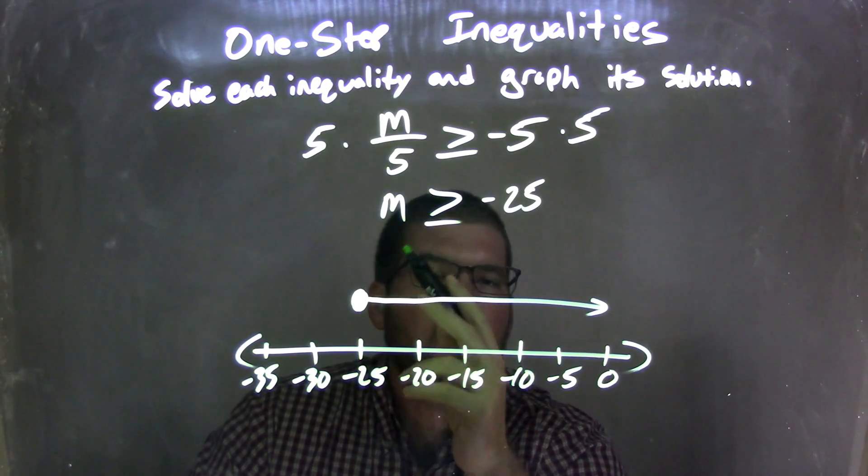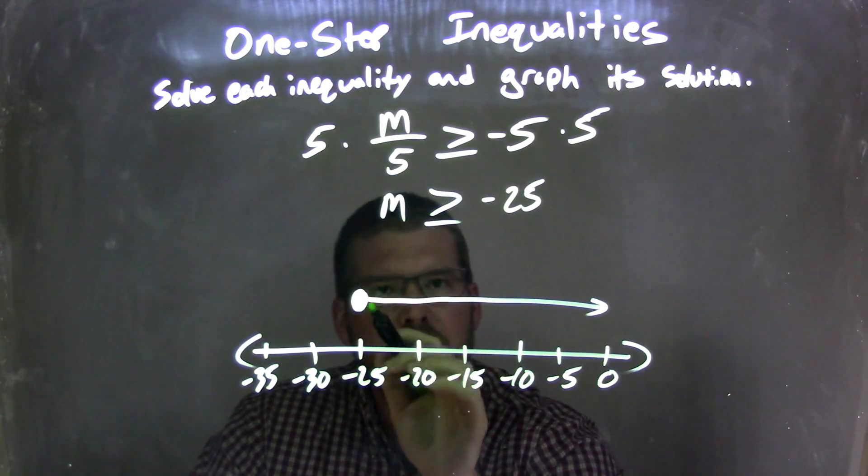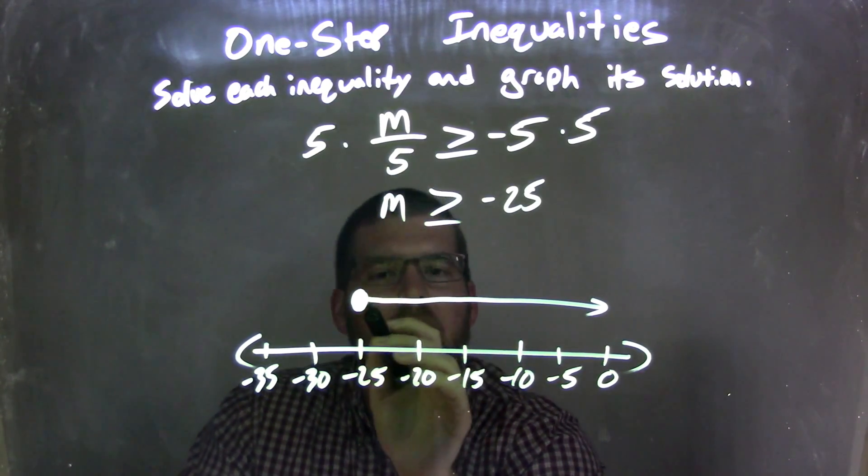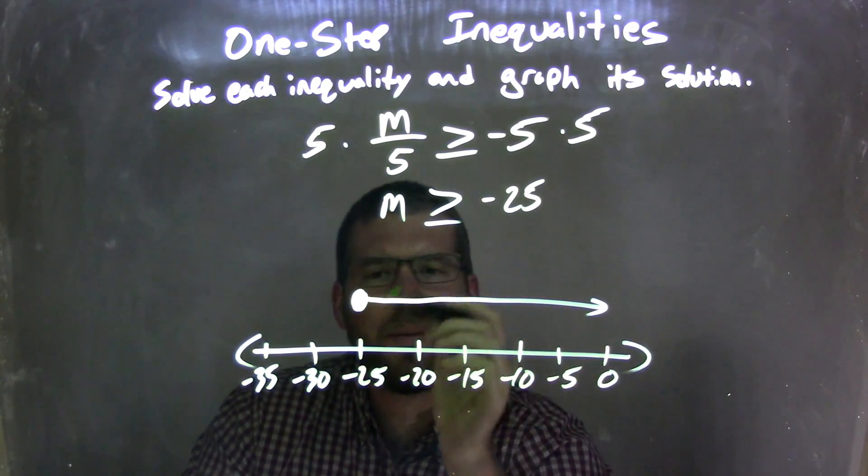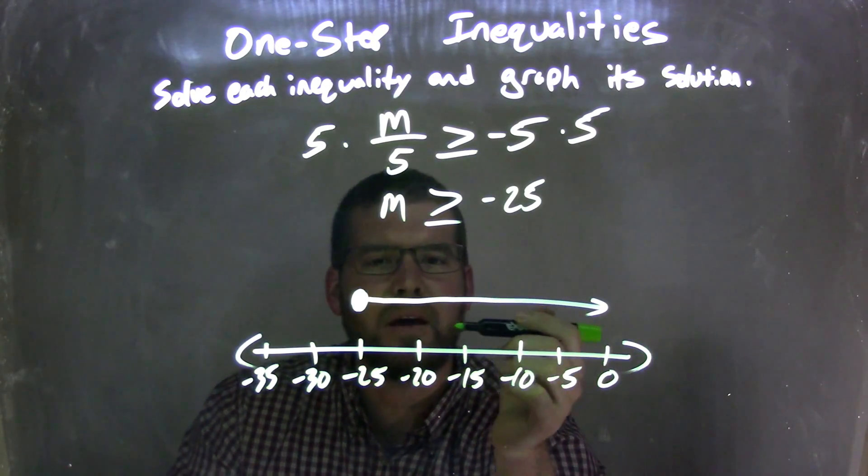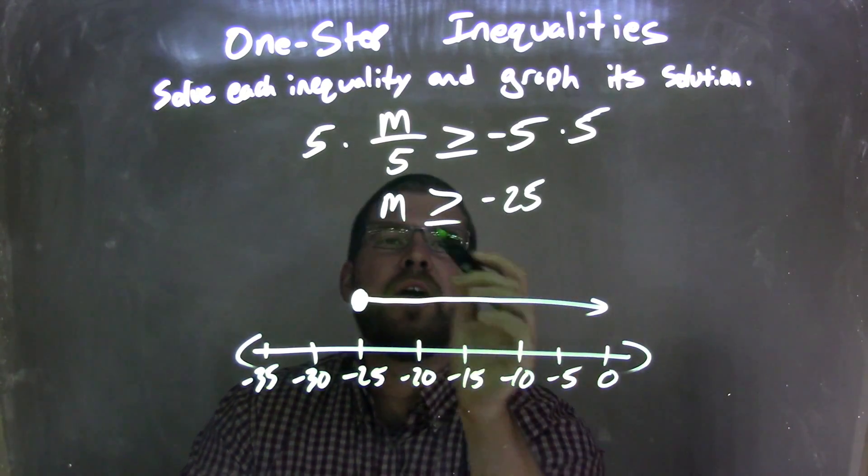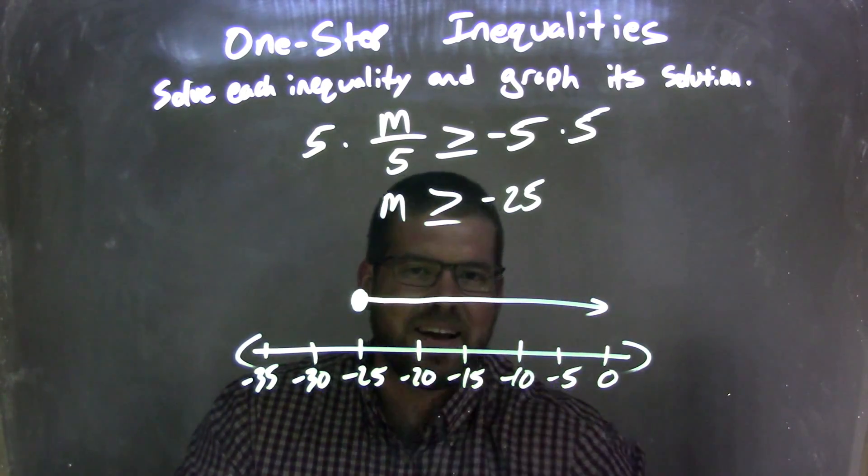From there, though, m was greater than also. So it's equal to as well as greater than. So I had to make my line to the right, to the greater side. And so this graph represents all values that m can be, and those values are m is greater than or equal to negative 25.